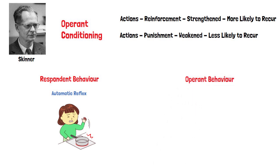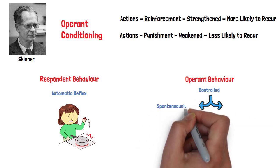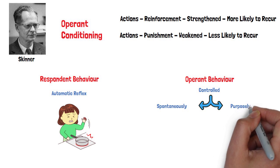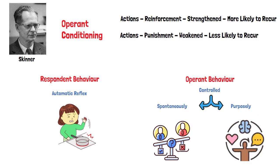Operant behaviors, on the other hand, are those under our conscious control. Some may occur spontaneously and others purposely. Their consequences influence whether or not they occur again in the future. Our actions in the environment and the consequences of these actions make up an important part of the learning process.